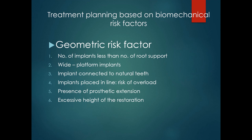It is important to consider the number of root supports that need to be replaced instead of the number of teeth. A canine represents one root support whereas a molar represents two root supports. So when replacing a molar with a single implant, it creates a geometric risk. This risk can be decreased by using either a wide platform implant or two regular platforms.